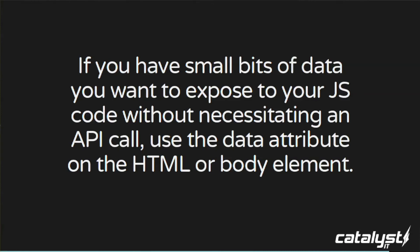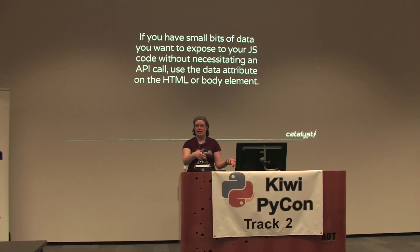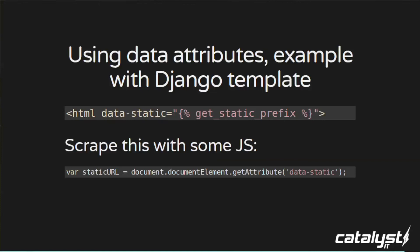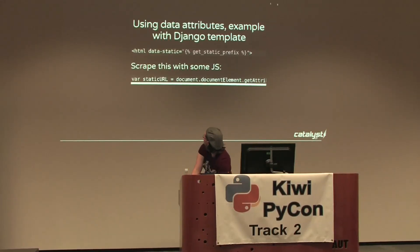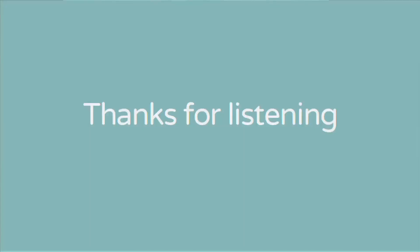I've said use APIs, but occasionally you'll have a small bit of data where it doesn't make sense to make an entire API call — like finding out where your static files directory is. You want it to be dynamic so you can change it in your Django settings, but you don't want to update all your JavaScript files or make an API call to check. One thing you can do is write that small chunk of data out into a data attribute on something like the HTML or body tag in your Python template, then scrape that with plain vanilla JavaScript — no framework required.